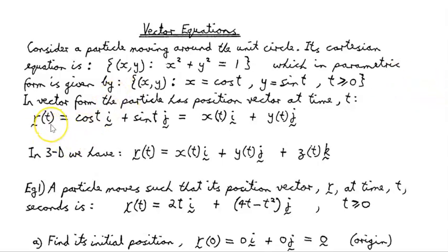So, our position vector, and we'll see a plot of that shortly, is cos t in the i direction plus sin t in the j direction. Now, that's the x coordinate as a function of time in the i direction, plus the y coordinate as a function of time in the j direction.